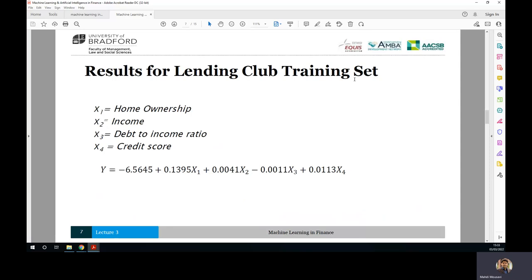So results for Lending Club training set has been as such. Again, depends on which version of book you use, this result might be different. So y is equal to -6.5645 plus 0.13x₁, which is home ownership, 0.0041, minus 0.0011, plus 0.113x₄, x₁ to x₄ as such. So we are going to talk about how we end up with this equation in the Excel file. Okay, don't worry about it.